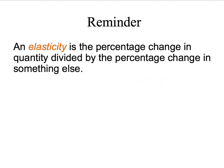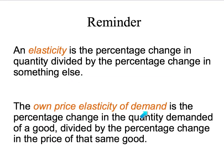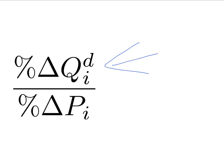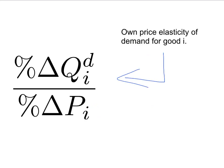First, a couple of reminders. An elasticity is the percentage change in quantity divided by the percentage change in something else. So the own price elasticity of demand for a good is simply the percentage change in the quantity demanded of that product divided by the percentage change in the price of the same product. Here's our formula: up the top of the fraction we have the percentage change in the quantity demanded for product i, and down the bottom we have the percentage change in the price of good i. So this formula is simply the own price elasticity of demand for good i.